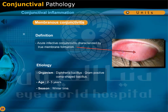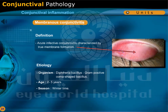Membranous conjunctivitis. This is an acute infective conjunctivitis characterized by true membrane formation. The causative organism is the diphtheria bacillus, which is a gram-positive, comma-shaped bacillus. The affected age is 2-5 years, and membranous conjunctivitis occurs in wintertime.